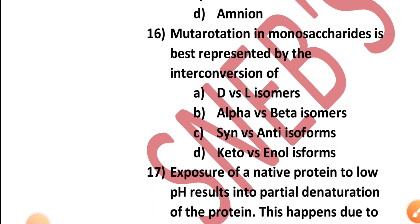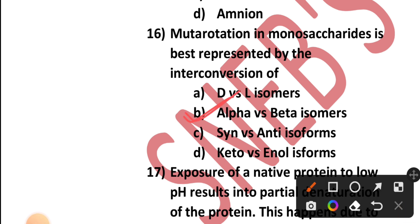Question number sixteen: Mutarotation in monosaccharides is best represented by the interconversion of — D versus L forms, dextrorotatory and levorotatory, alpha versus beta isomers, syn versus anti isoforms, or keto versus enol isoforms? It is best represented by the interconversion of alpha versus beta isomers.